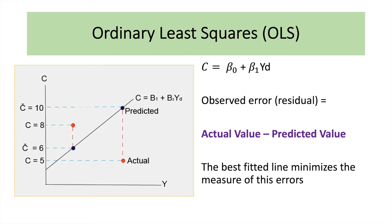What OLS is trying to do is find the best fitted line that minimizes the measures of these errors. The smaller the error — for example, between 8 (actual) and 6 (predicted) — the better the line will be, the more precise. Therefore, when we run regression, there is an Ordinary Least Squares mechanism incorporated where we are trying to minimize the observed errors, which is the difference between the actual value and the predicted value, so that we can get the best fitted line.